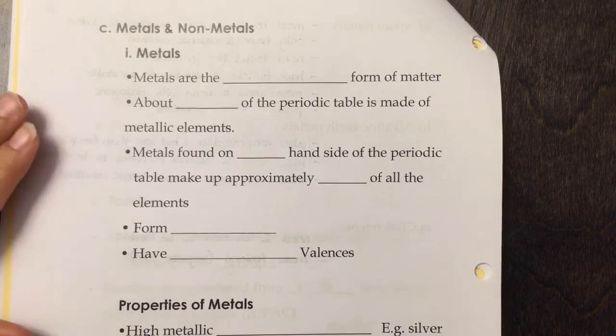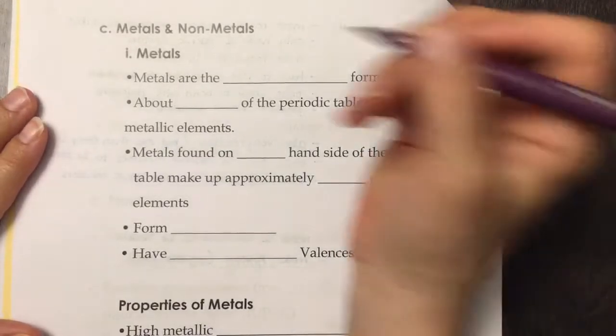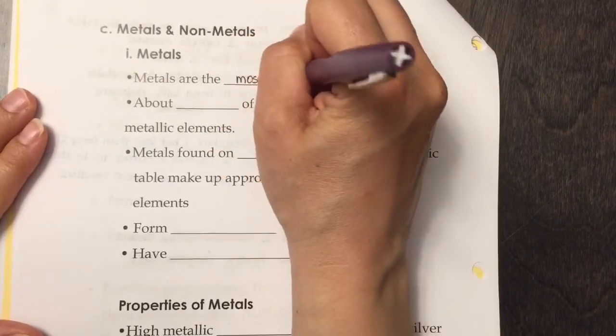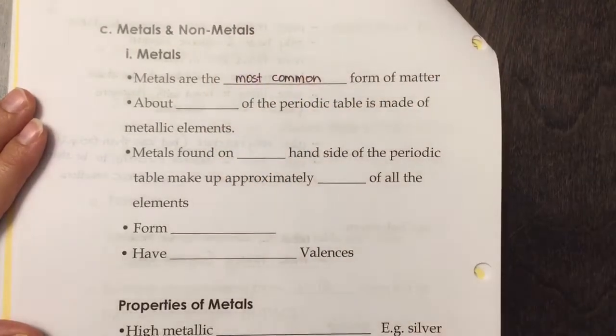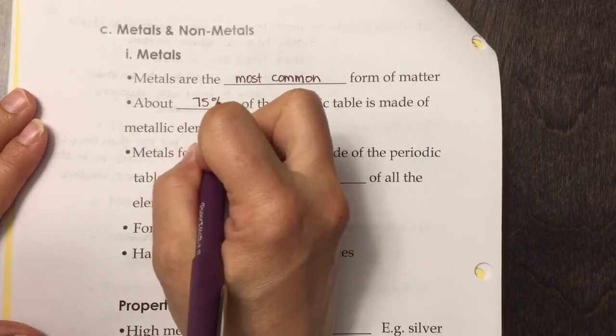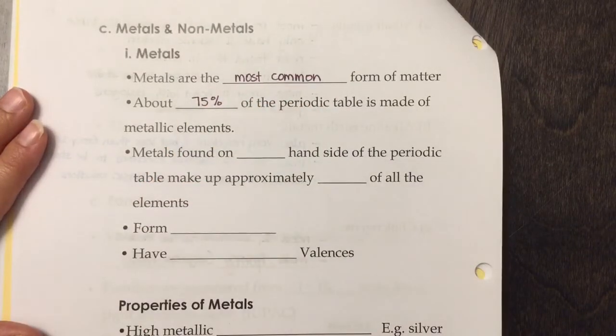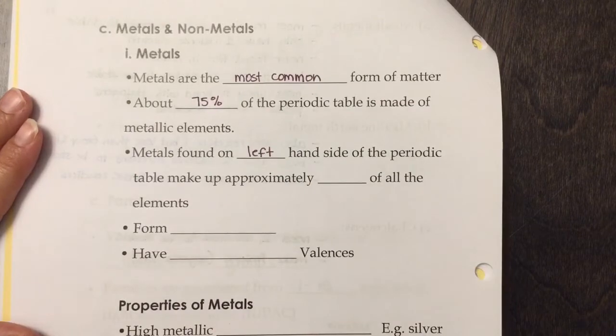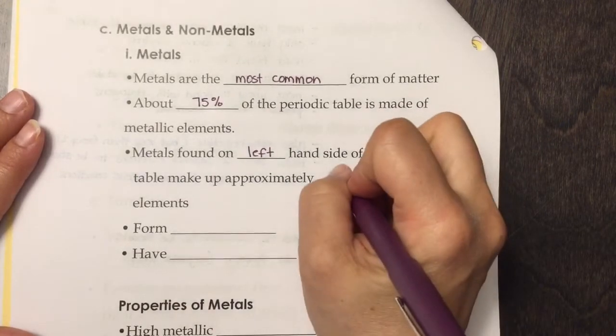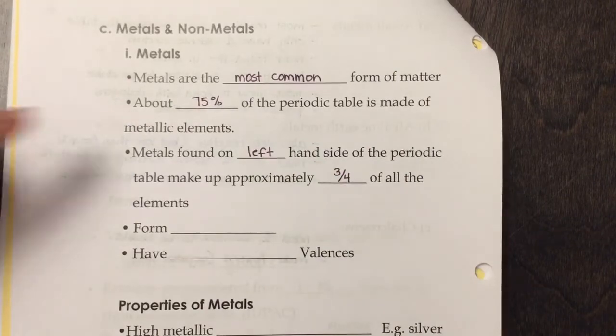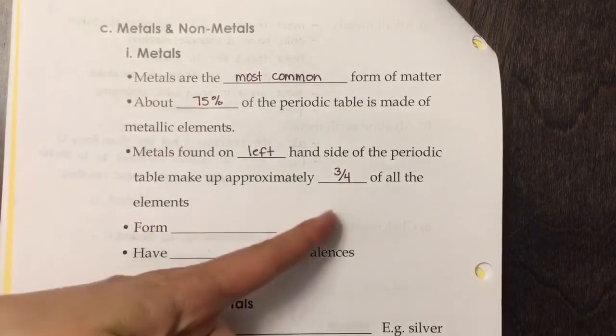Metals are the most common form of matter. About 75% of the periodic table is made of metallic elements. Metals are found on the left-hand side of the periodic table and make up approximately three-quarters of all the elements.